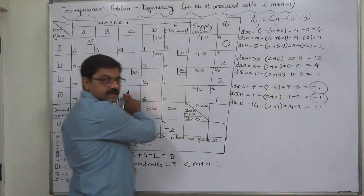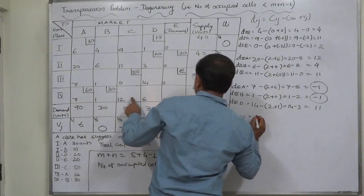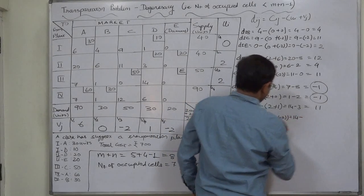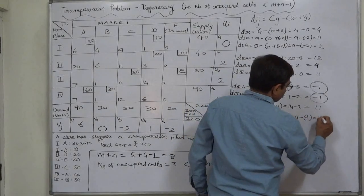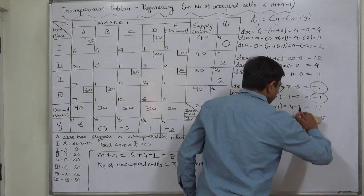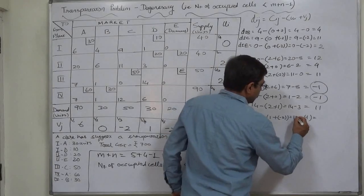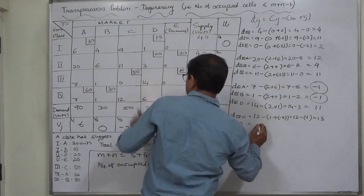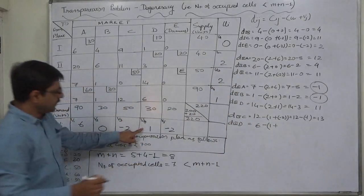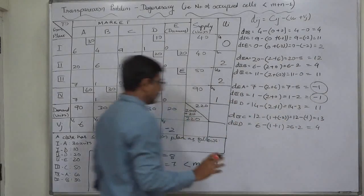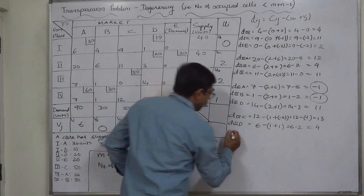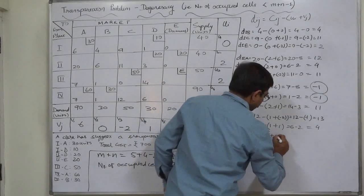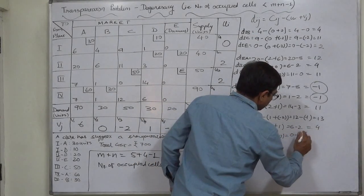Now for row 4: d(4c) = c is 12 minus ui 1 minus vj (minus 2) = 12 minus 1 plus 2 = 13, positive. For d(4d): c is 6 minus ui 1 minus vj 1 = 6 minus 2 = 4, again positive. And the last, d(4e) = 0 minus 1 minus (minus 2) = 0 minus 1 plus 2 = positive 1.